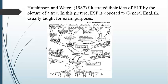An example of English for Occupational Purposes within English for Science and Technology is English for Technicians. Whereas an example of English for Academic Purposes is English for Medical Studies. At the top of the tree, you can see that we have courses which are very specific for each field.